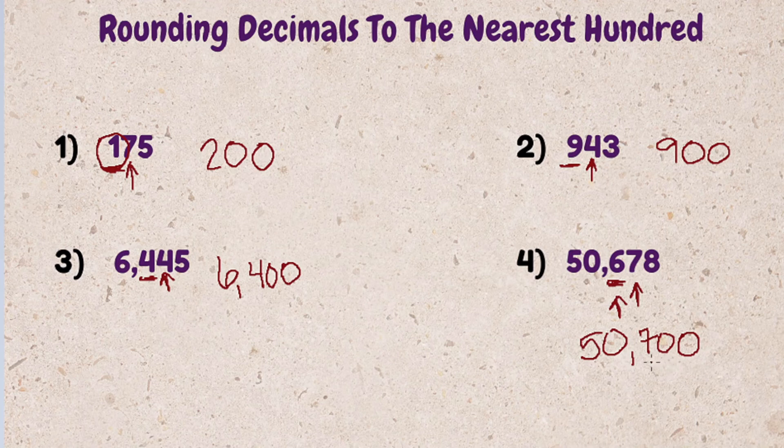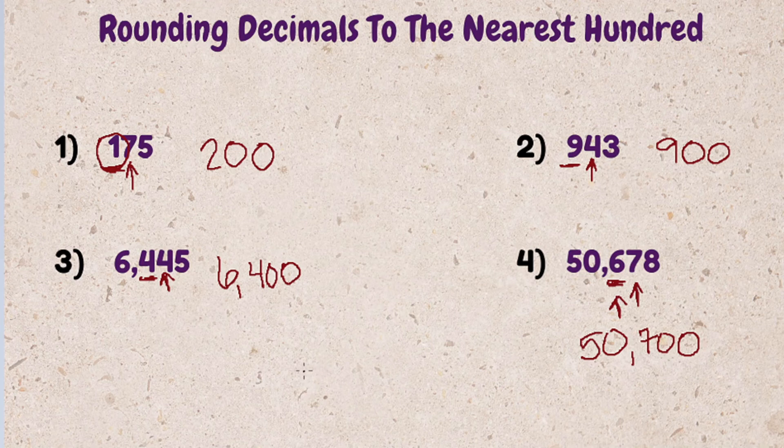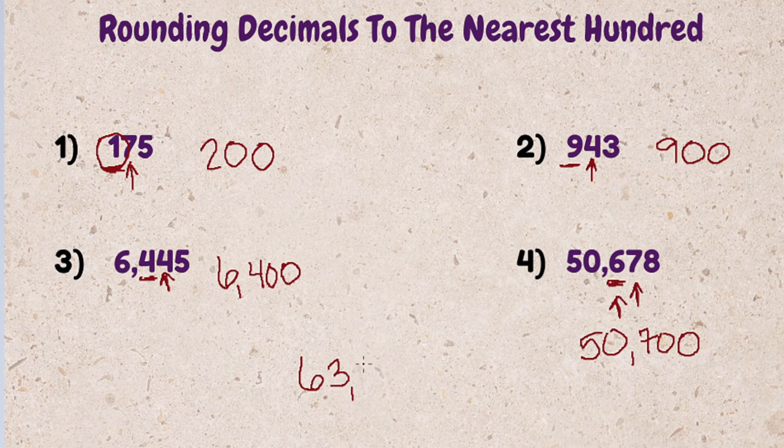Now that we've gone through a few examples, see if you can do this one on your own. Leave your answer in the comments. Round to the nearest hundred, 63,284. Good luck.